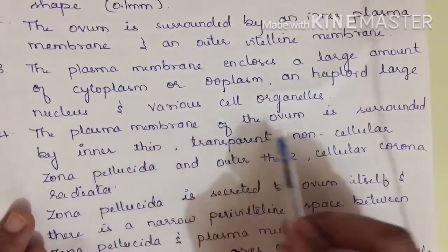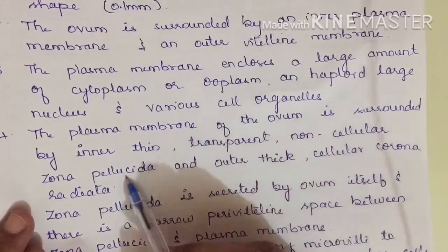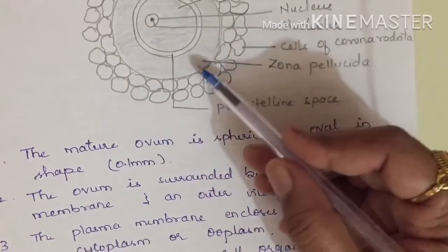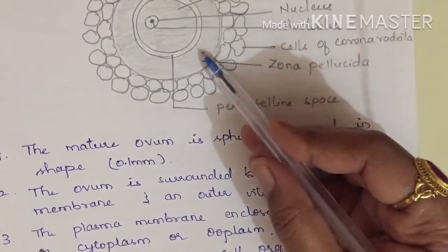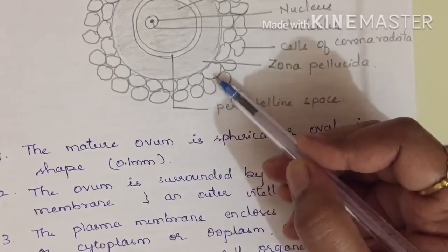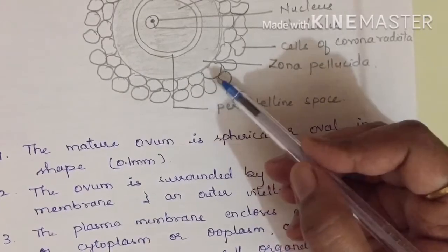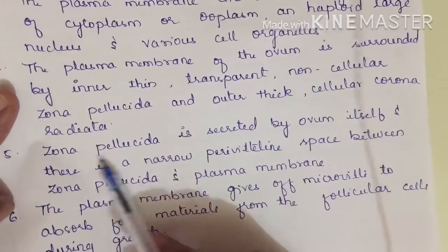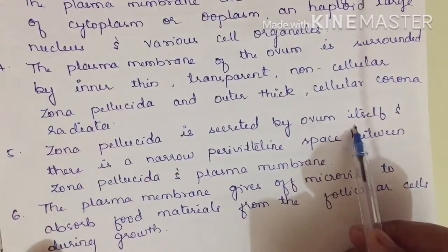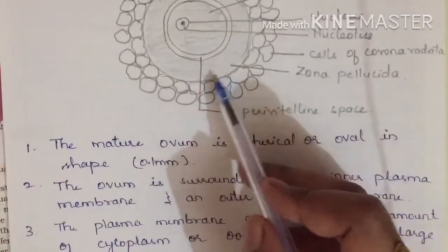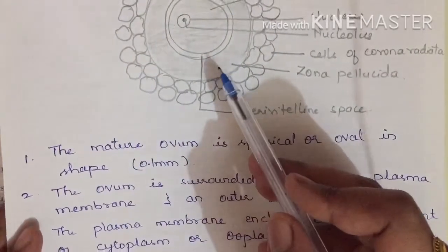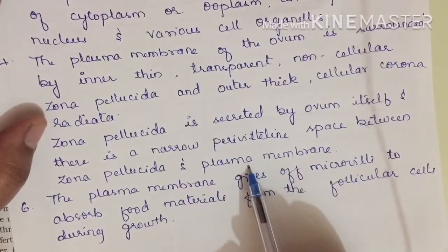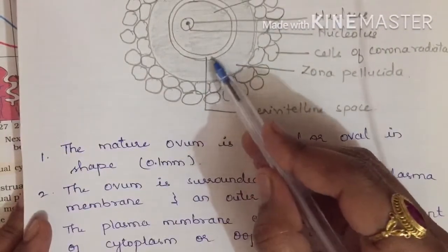The plasma membrane of the ovum is surrounded by an inner thin transparent noncellular zona pellucida layer, and the outer one is a thick cellular layer called corona radiata. Zona pellucida is secreted by the ovum itself. There is a narrow perivitelline space between the zona pellucida and the plasma membrane.